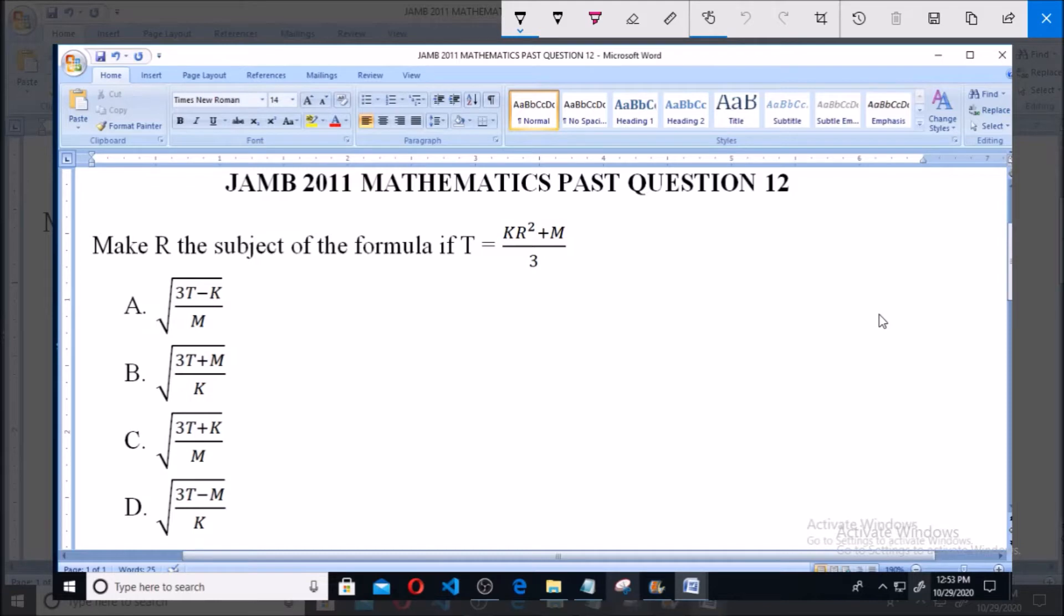Hello, good day and welcome. I'll be answering JAMB 2011 Mathematics past question 12. Make R the subject of the formula if T equals KR squared plus M all over 3.